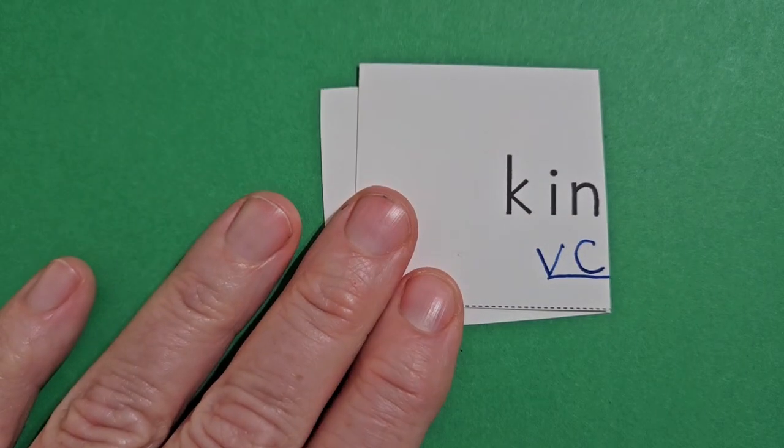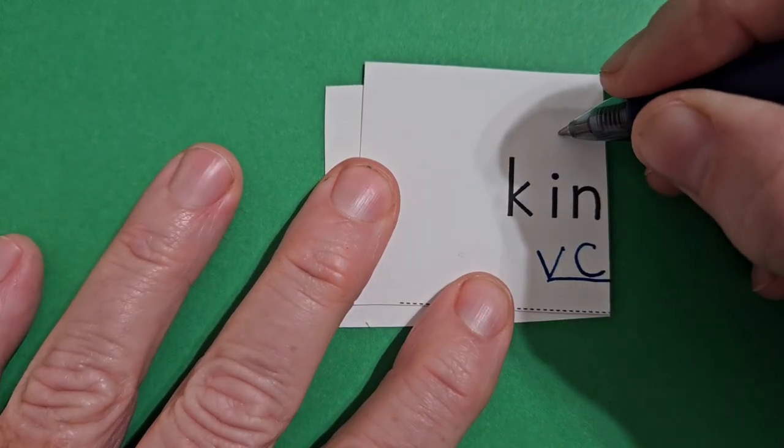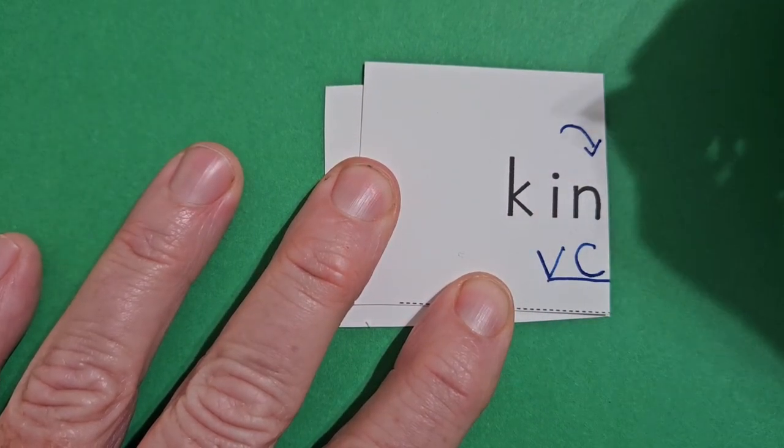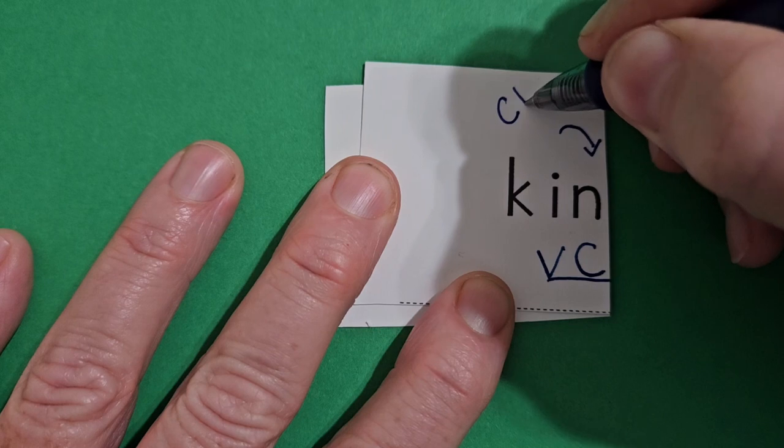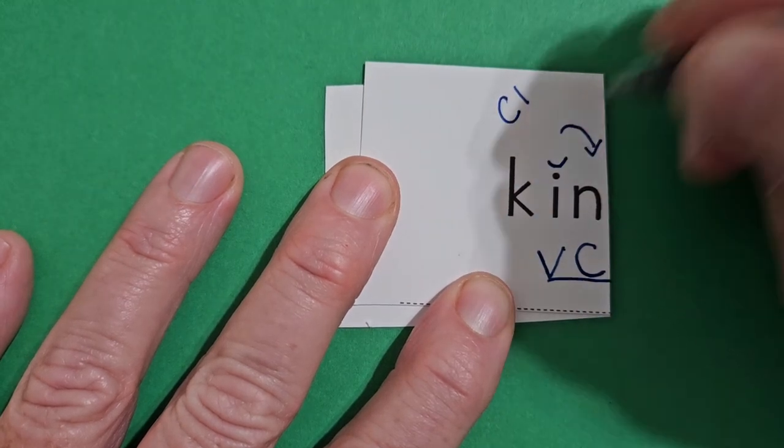Let's isolate those syllables. There is a consonant after the vowel. Therefore, it's closed and it makes a short I sound.